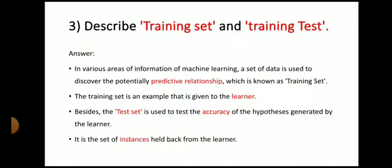Next question: describe training set and testing set. In machine learning, a set of data used to discover potentially predictive relationships is known as the training set. It is an example given to the learner. The test set is used to test the accuracy of the hypothesis generated by the learner — it is a set of instances held back from the learner.